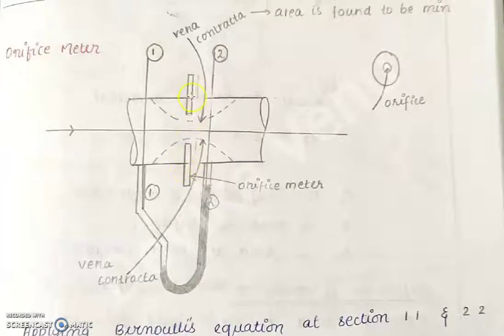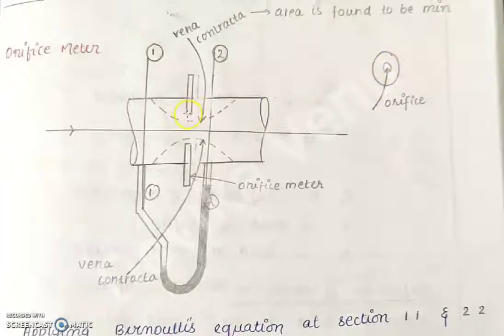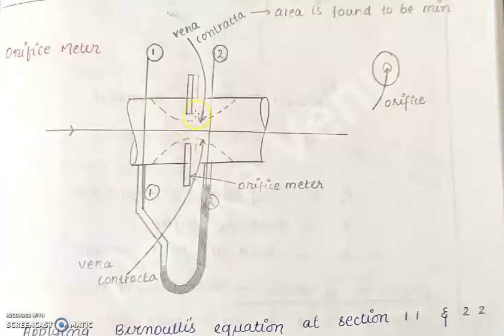Here you can see a flat plate — it's a circular flat plate with a sharp edge. In the figure the sharp edge is not clearly visible, but there is a sharp edge over here, and this is the orifice.